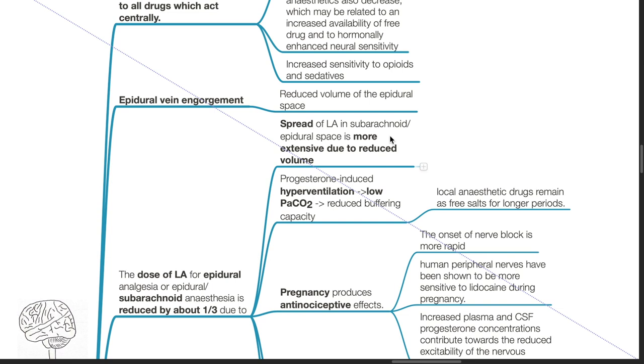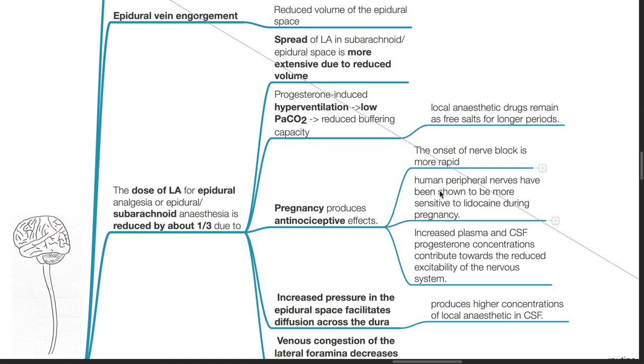Progesterone-induced hyperventilation results in low PaCO2, reduced buffering capacity, and local anesthetic drugs remain as free salts for longer periods. Pregnancy produces antinociceptive effects. The onset of nerve blocks is more rapid. Human peripheral nerves are more sensitive to lidocaine during pregnancy.